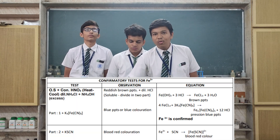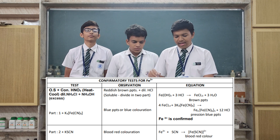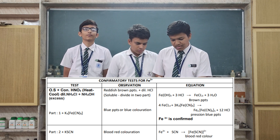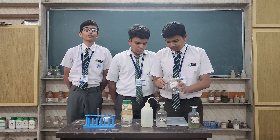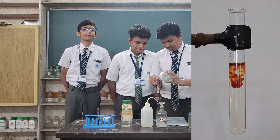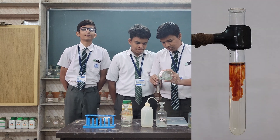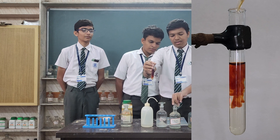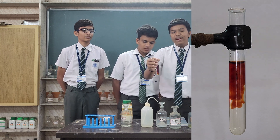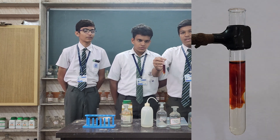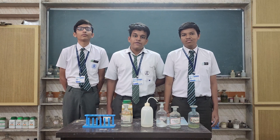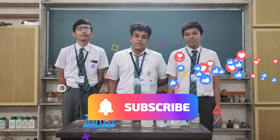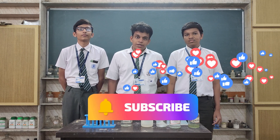Now Part 2 — add some KSCN. The red color confirms that Fe³⁺ ion is present, and this way we can detect the Group 3 cations and confirm it as Fe³⁺.